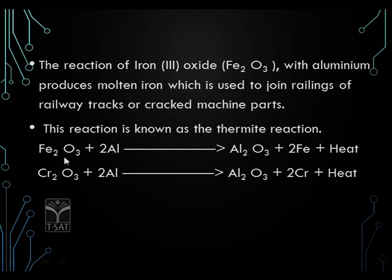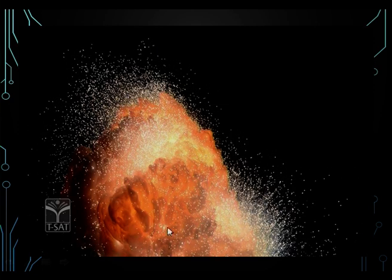In the thermite process, iron oxide reacts with aluminium to form aluminium oxide while liberating molten iron along with an enormous amount of heat, enough to melt the iron. The iron is extracted in molten state. Similarly, in the thermite process you can also reduce chromium oxide — aluminium displaces less reactive chromium, forming aluminium oxide and pure chromium metal with an enormous amount of heat. The metals extracted are collected in molten form.